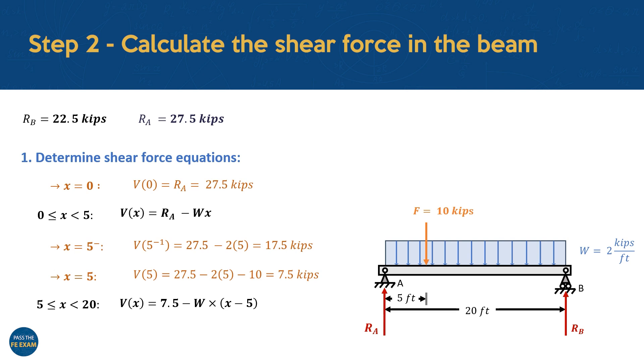Now, continuing to the right of the point load, the distributed loading keeps reducing the shear force. We account for this, and find that the shear force equation for this section can be described as 7.5 negative W times (x negative 5), where the 7.5 kips is the shear we just calculated at the point load. And we once again subtract the effect of the distributed load from this equation. Here, we also use the term x negative 5 instead of just x, since the distributed load in the first section of the beam has already been accounted for. We use this equation and substitute x is equal to 20 to find that the shear just before the end of the beam has a value of negative 22.5 kips.